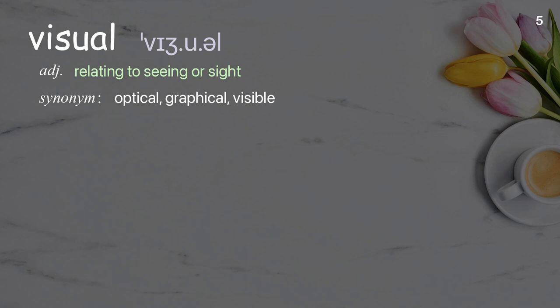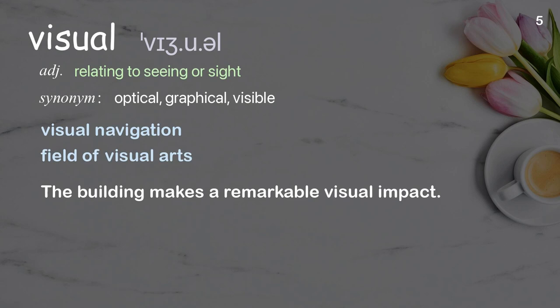Visual: relating to seeing or sight. Examples: visual navigation; field of visual arts; the building makes a remarkable visual impact.